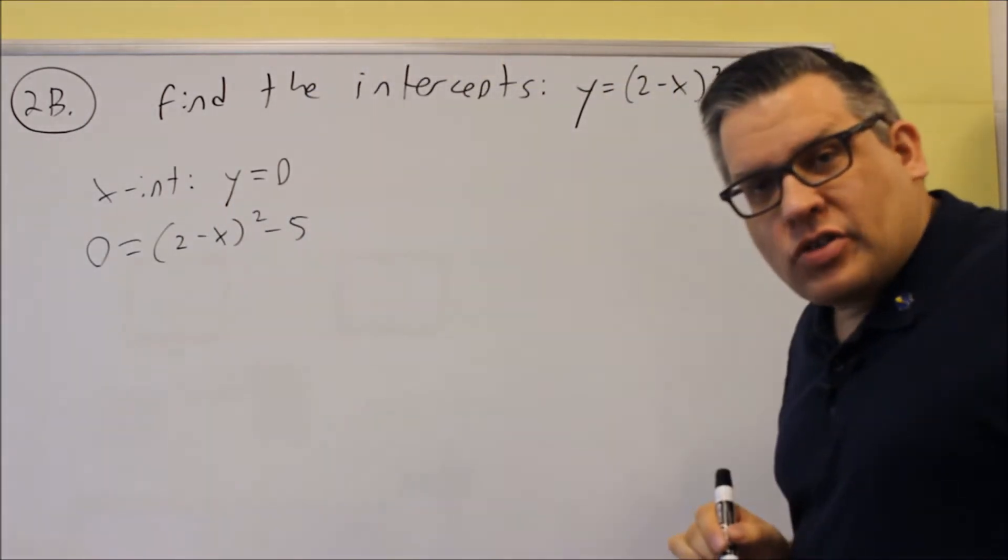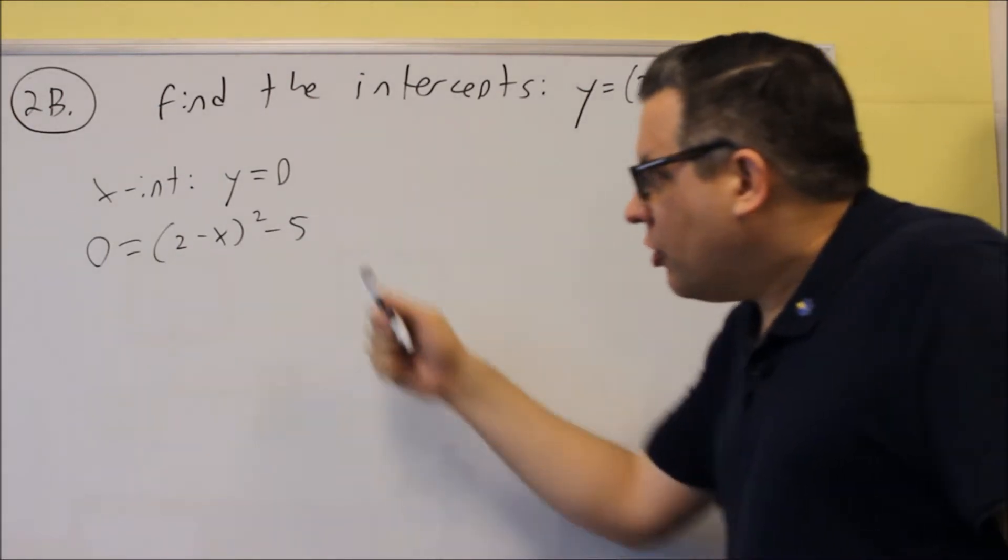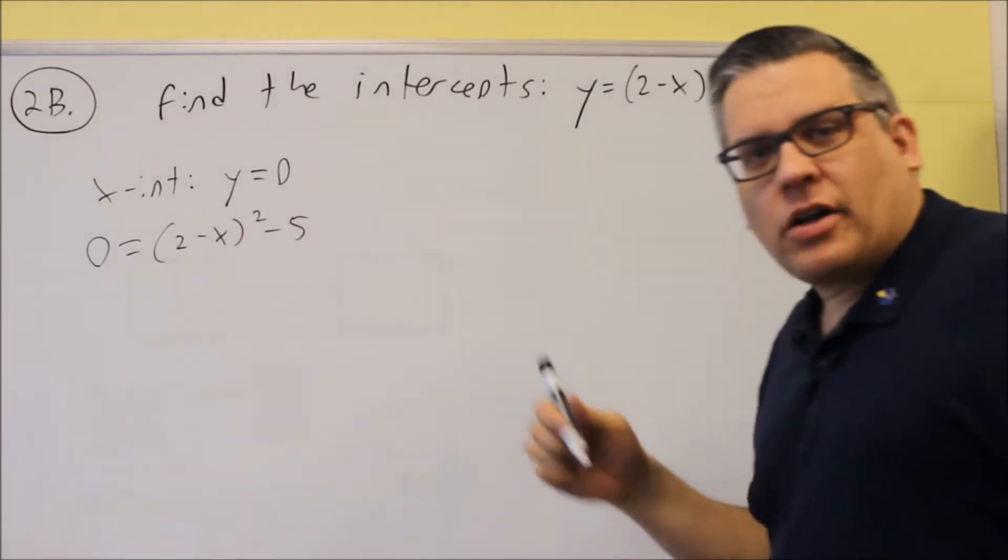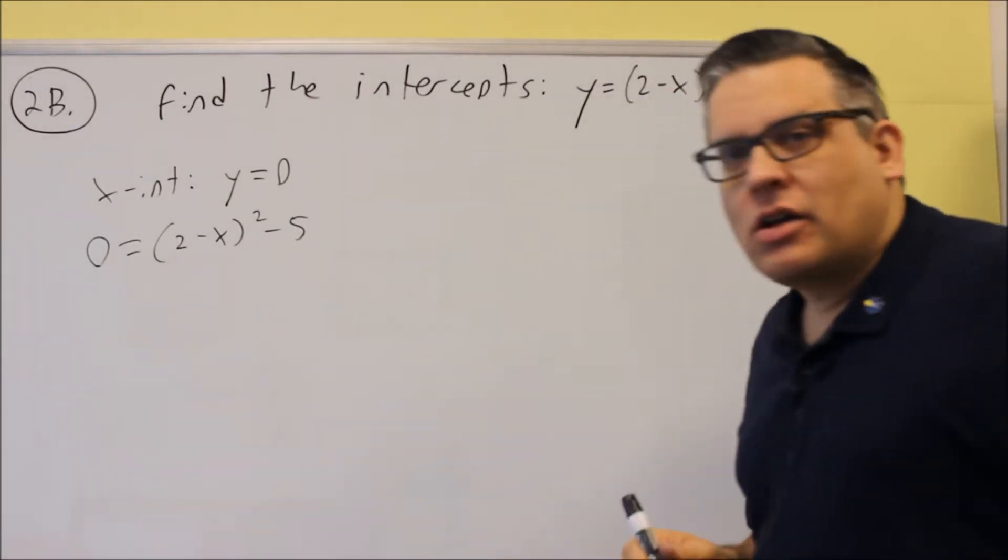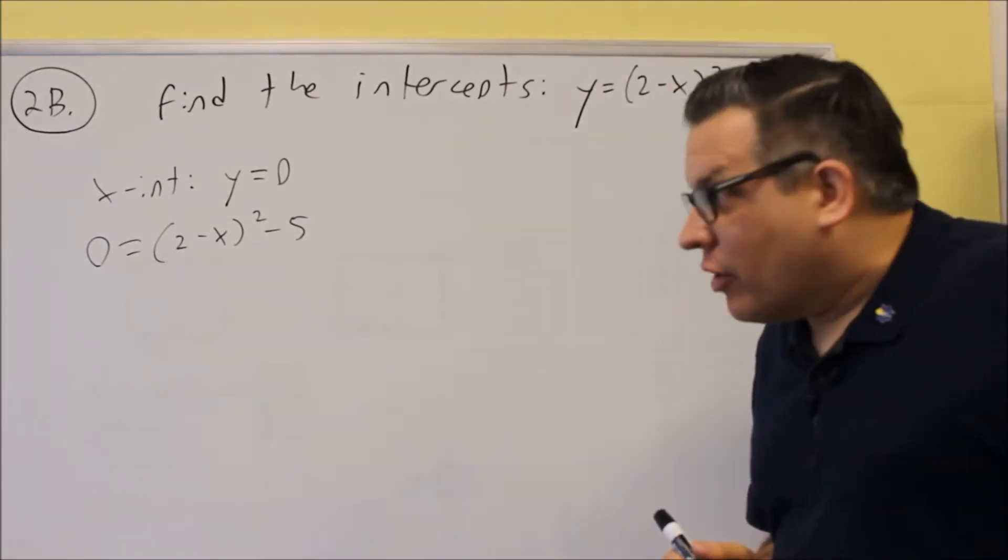Now, a couple different ways that you could do this one. You could multiply 2 minus x, 2 minus x, multiply that together, simplify it, factor that one, and then get the answer that way.